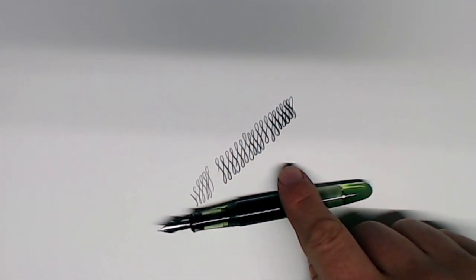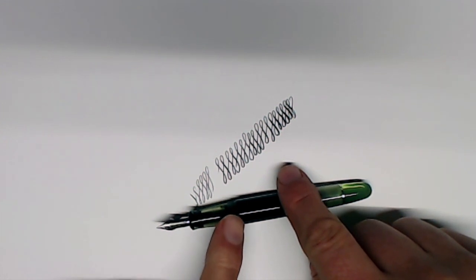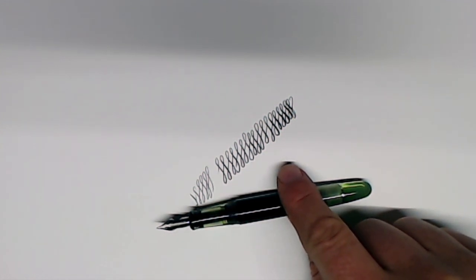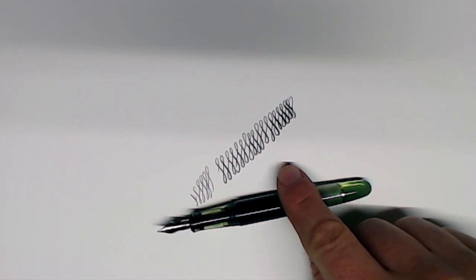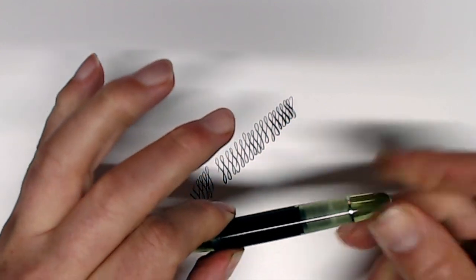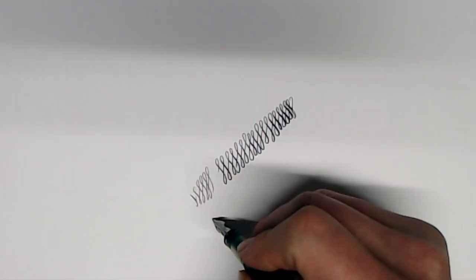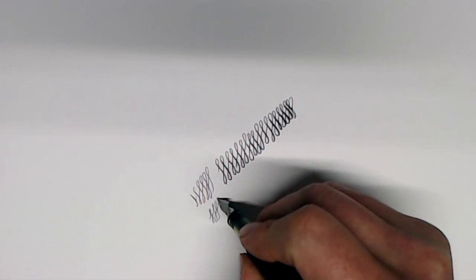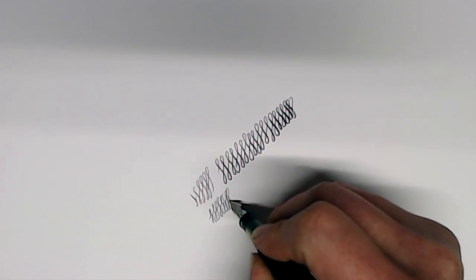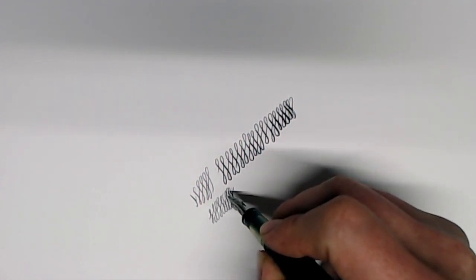But for flexible writing, the shutoff valve actually has an additional advantage, in that if I want a normal flow, I can keep the valve closed. So let's say I just want to write with a thing, and don't need the extra flow for flex, I keep the valve closed. However, if I do want to flex the pen, by opening the valve, it will increase the ink flow.